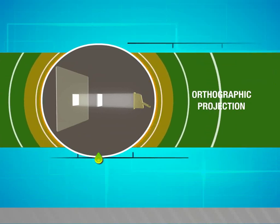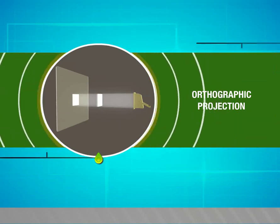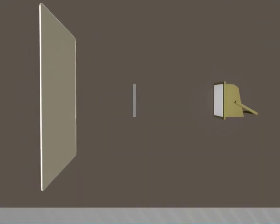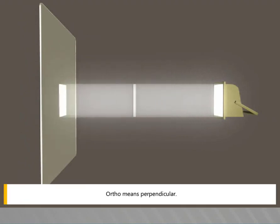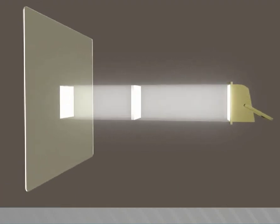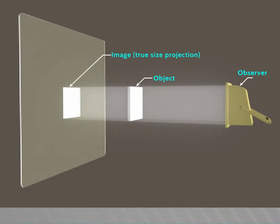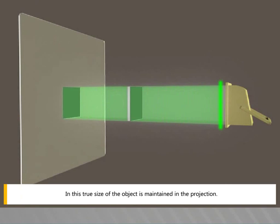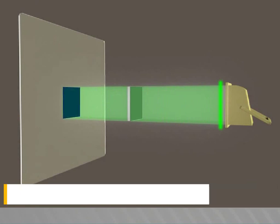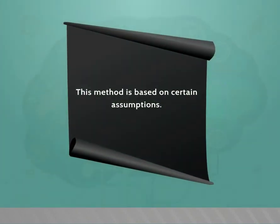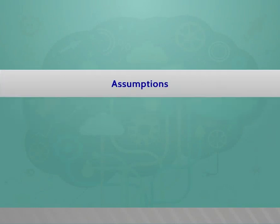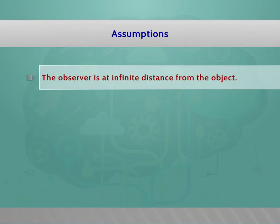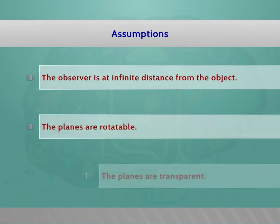In this video we are going to see about orthographic projection. Ortho means perpendicular. It is a projection method in which the rays of sight are perpendicular to the plane of projection and are parallel to each other. The true size of the object is maintained in the projection. This method is based on certain assumptions: the observer is at infinite distance from the object, the planes are rotatable, and the planes are transparent.